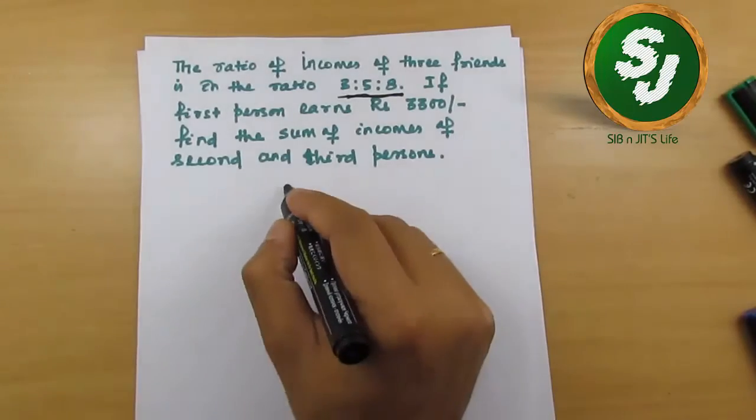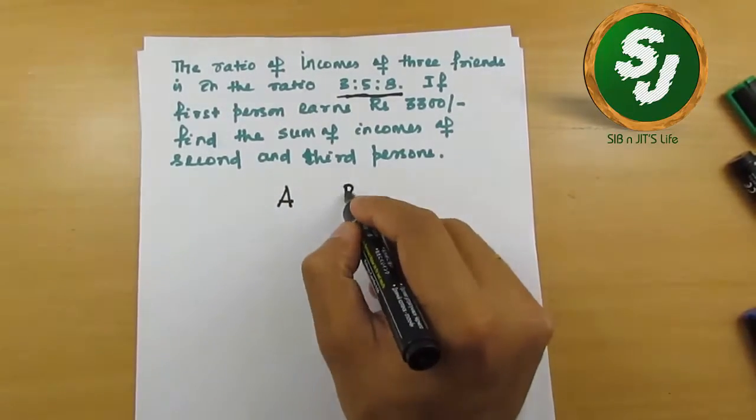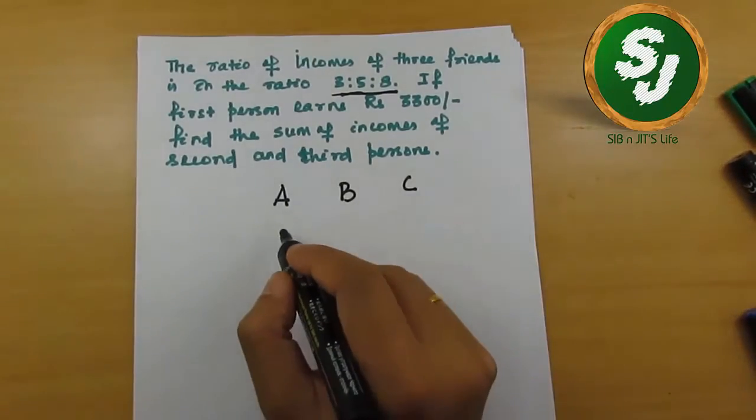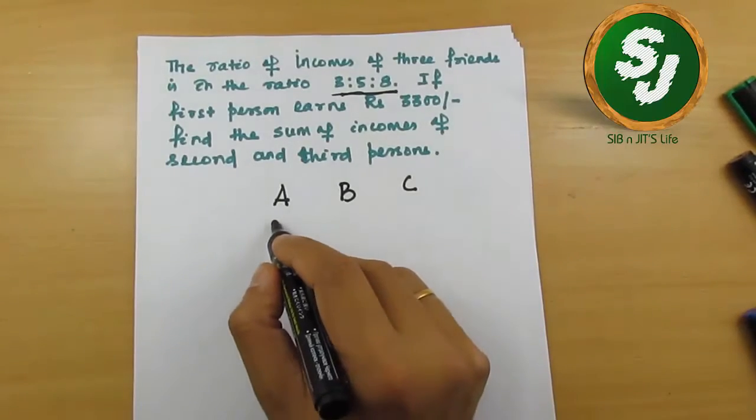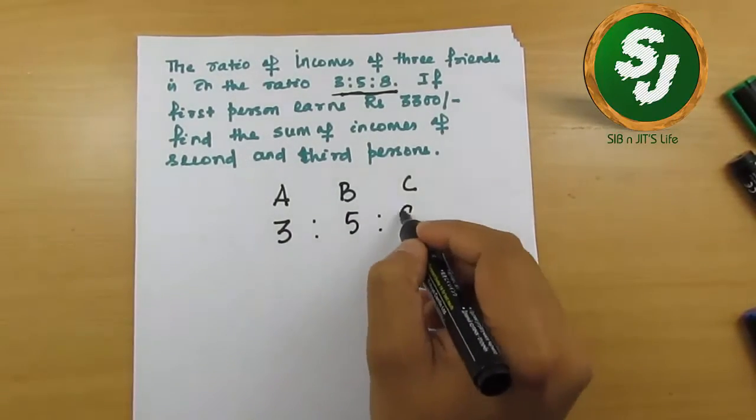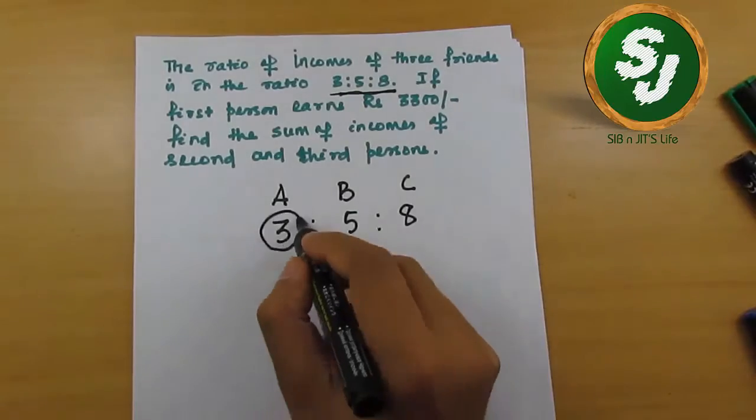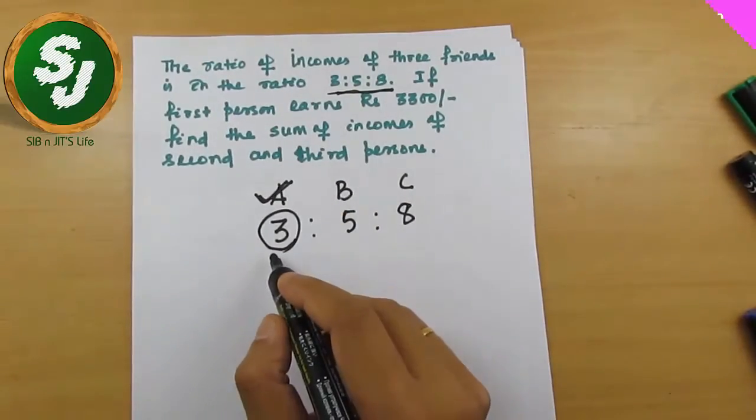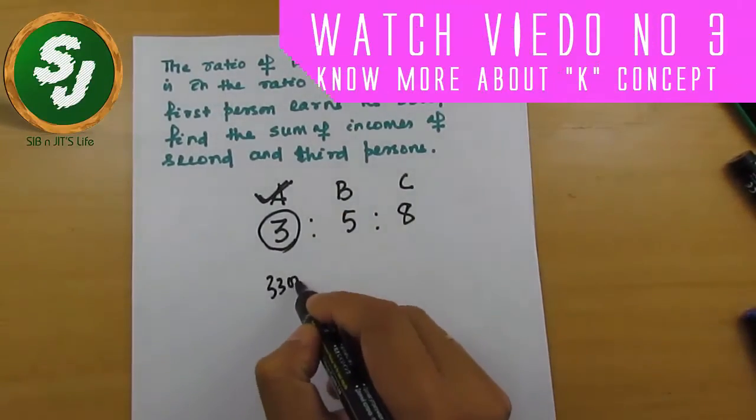There are three friends A, B, and C whose ratio of their income is 3:5:8. The first person earns 3300 rupees.